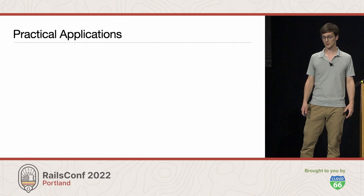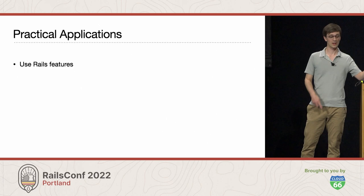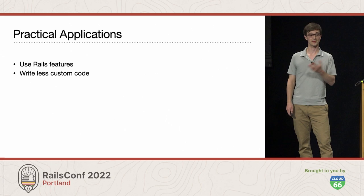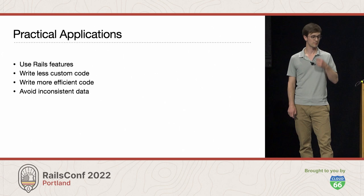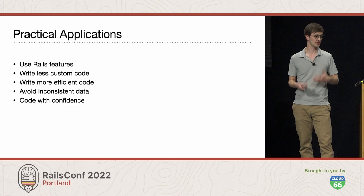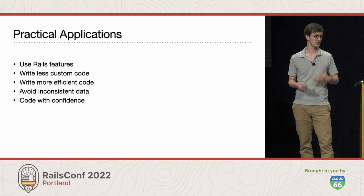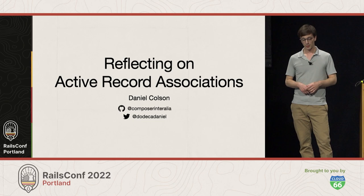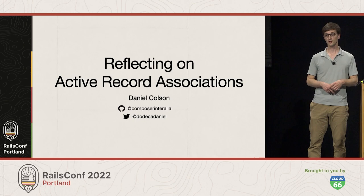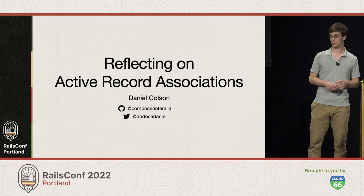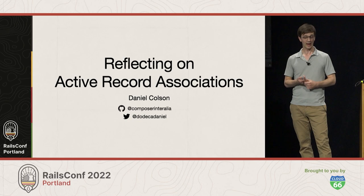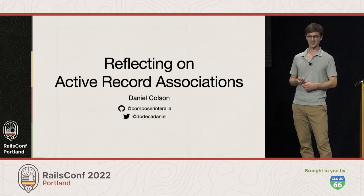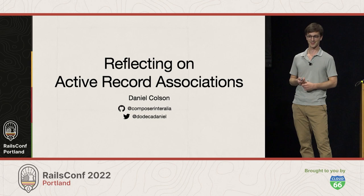My experience has been that demystifying ActiveRecord associations has allowed me to use them more effectively. I'm able to better leverage features that are built into Rails, write less custom code, and rely on the code that's already in Rails. Understanding things like inverse_of lets me write more efficient code and avoid inconsistent data. Perhaps most importantly, I'm coding more confidently — I understand why I'm writing what I'm writing. So the next time you're working with ActiveRecord or really any other library and you find yourself confused by something that seems magical, consider taking a moment to reflect on how that code is working. Studying your tools can help you use them more effectively and broaden your knowledge in general. Why not study to become a Rails magician? Thank you.